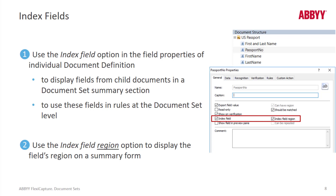A really important point is that child documents in a document set should have key fields set as index fields. If you select the index field option, you can display the field's value in a summary field, and that can really speed up verification. Furthermore, we can select the index field region and actually show the image snippet in that summary form, which is very useful for things like signature fields.